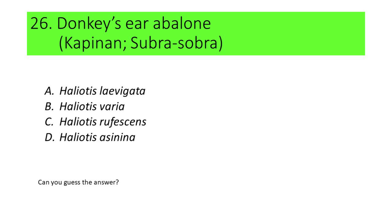Number 26. This species is commonly called donkey's ear abalone. Locally, this is called capinan or sobra-sobra. A. Haliotis levigata, B. Haliotis varia, C. Haliotis rufescens, and D. Haliotis asinina. Can you guess the answer?